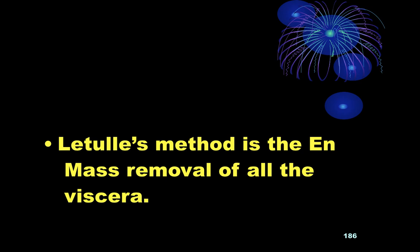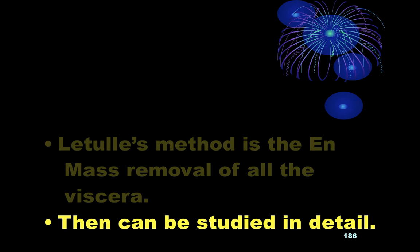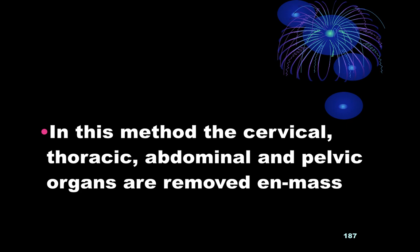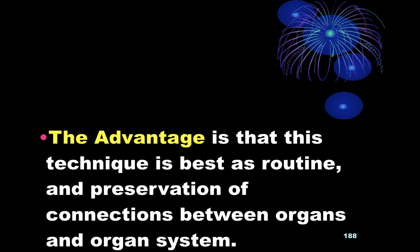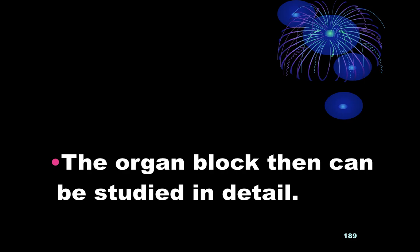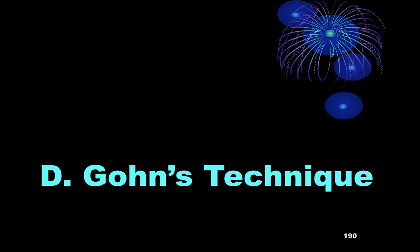Letulle's technique: Letulle's method is en-masse removal of all viscera, which are then studied in detail after en-masse removal. In this method, the cervical, thoracic, abdominal, and pelvic organs are removed en-masse, but subsequently dissected as an organ block. The advantage is that it is the best as a routine method, and the connection between organs and organ systems is preserved. The organ block can then be studied in detail.